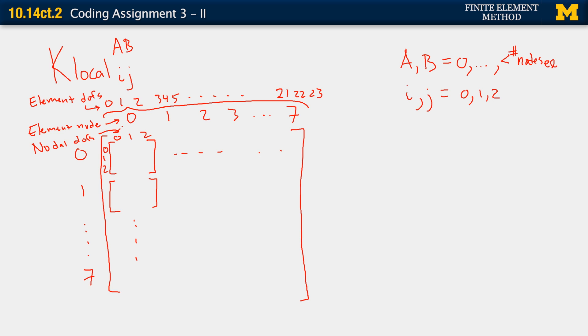So you'll notice when we look at the code again that our loops are actually looping over the element nodes and the nodal degrees of freedom. However, the indices in Klocal will be in terms of the element degrees of freedom. So how do we do that conversion? Because the indices start at 0, it actually makes it simpler in this case. So we would do it like this. Klocal a, b, i, j corresponds to 3 times a, plus i, comma, 3 times b, plus j.